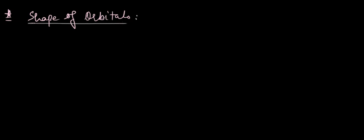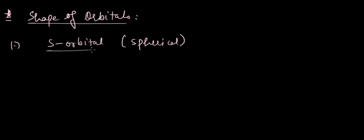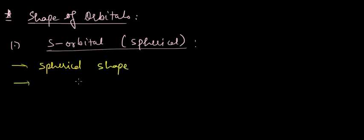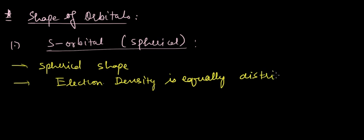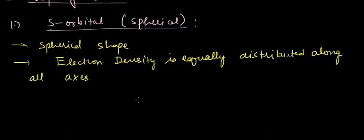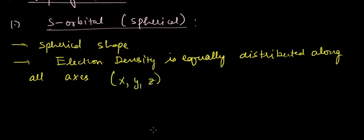Now let's look at the shape of orbitals. The shape of the s orbital is spherical — electron density is equally distributed along all axes (x, y, and z).